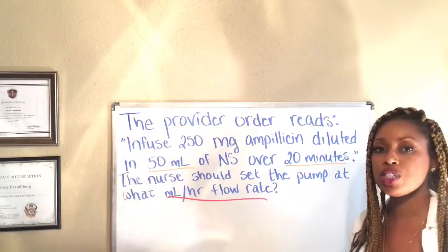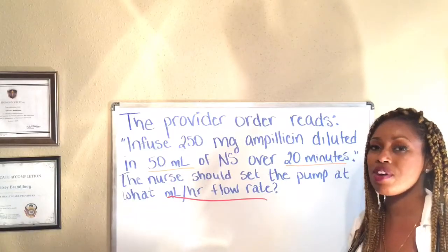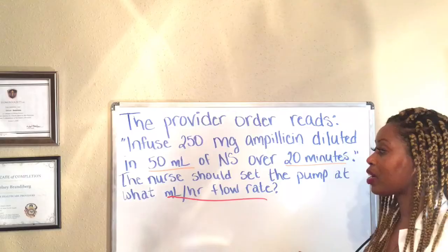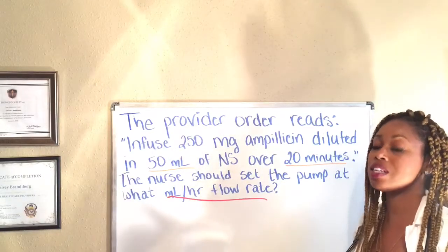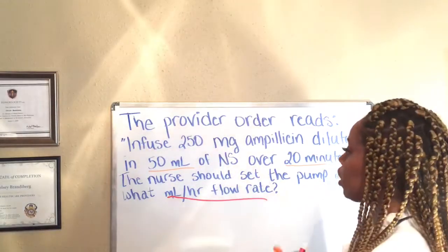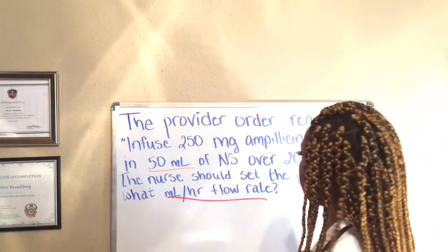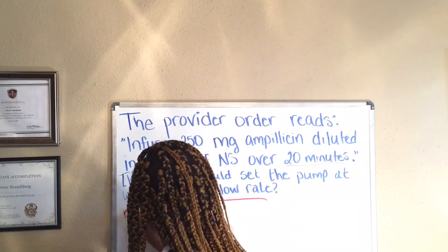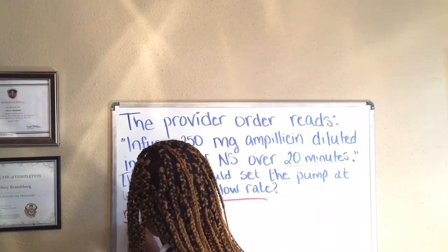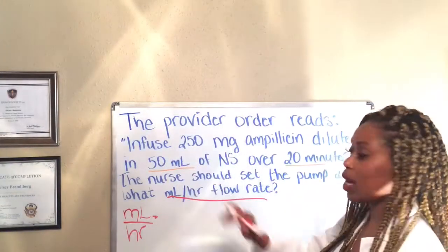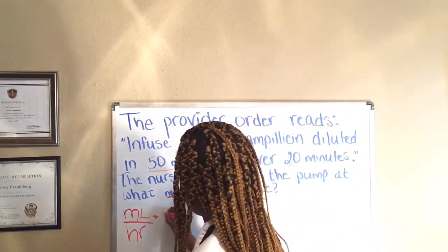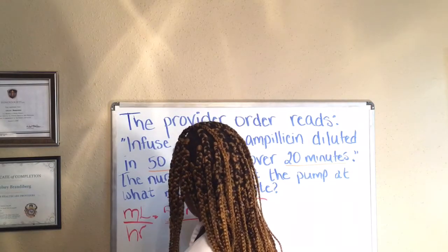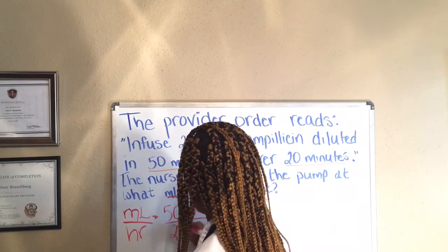I'm going to show you how to use dimensional analysis, which is very, very easy. I recommend you use dimensional analysis while working these problems out because it really breaks it down and makes it a lot easier. We're looking for milliliters per hour. We already know that we have 50 milliliters over 20 minutes.